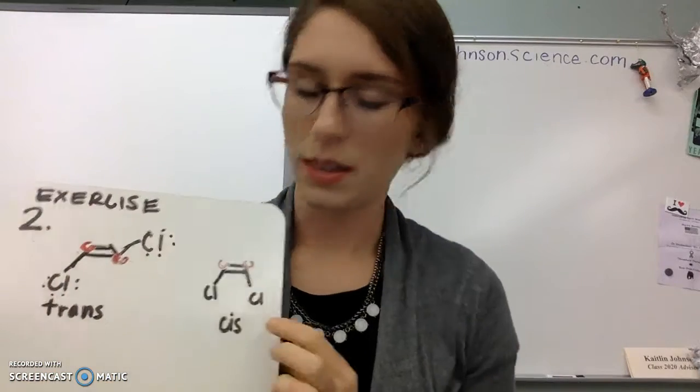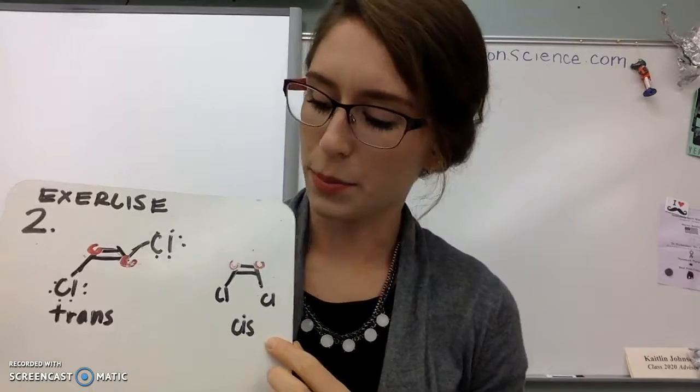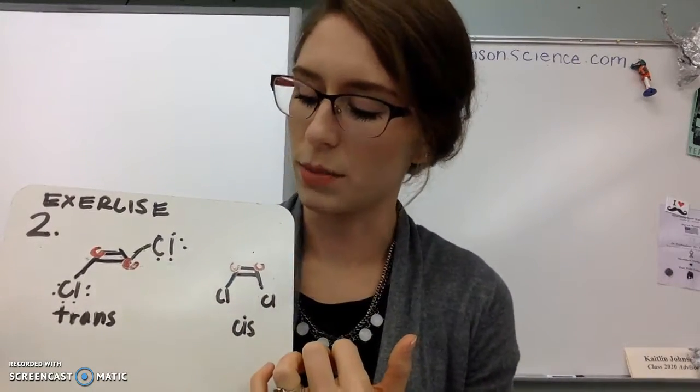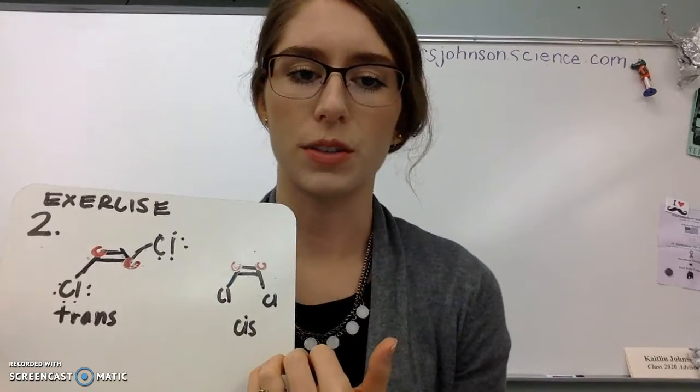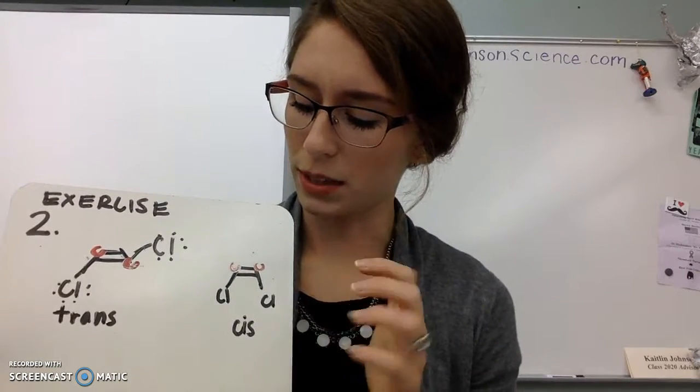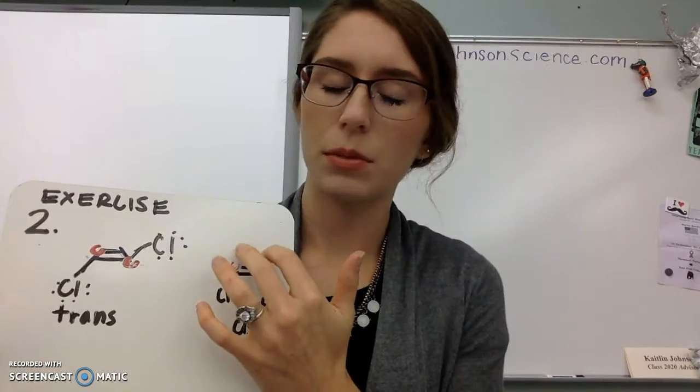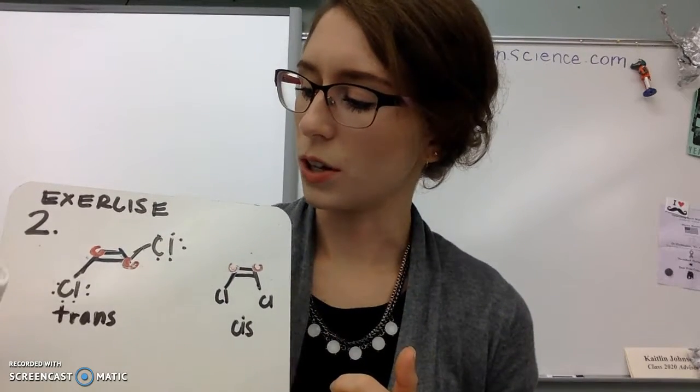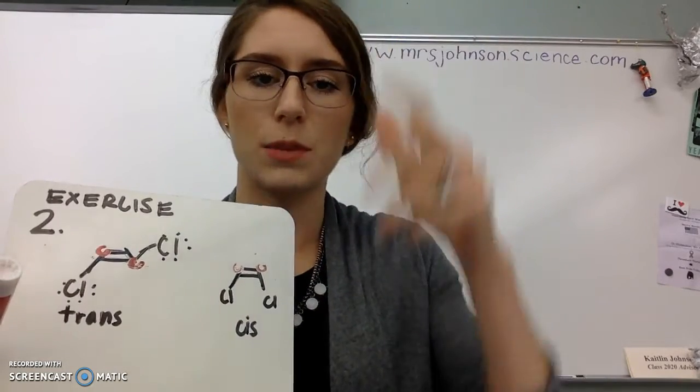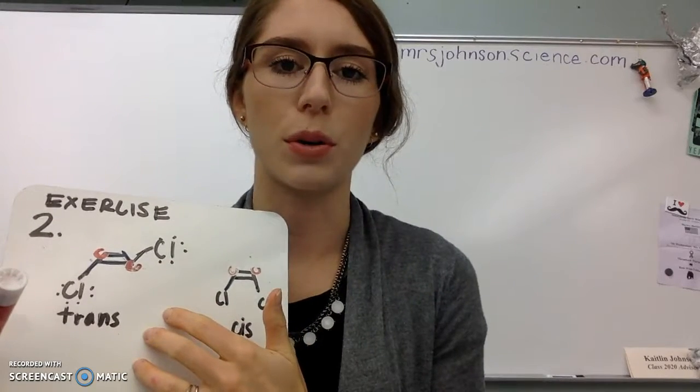So what we see here is that the cis molecule is a polar molecule. It has a permanent dipole moment because these chlorines are very electronegative and pull electron density towards them. So if we were to put this molecule in an electric field, it would line up, or the molecules, excuse me, would line up with the electric field. This negative side would align with a positive plate. This side would align with the negatively charged plate. If we put the trans molecule in an electric field, it would just keep spinning around. There's no good orientation. So we would say that this is a nonpolar molecule.